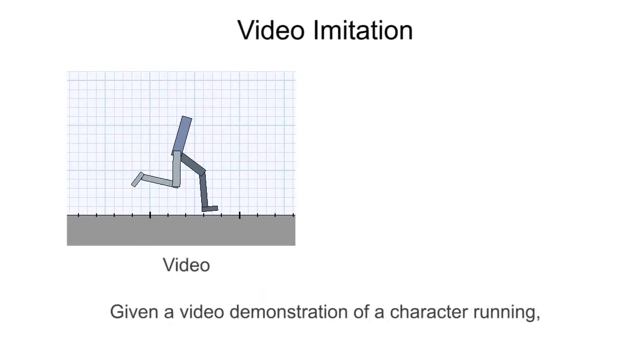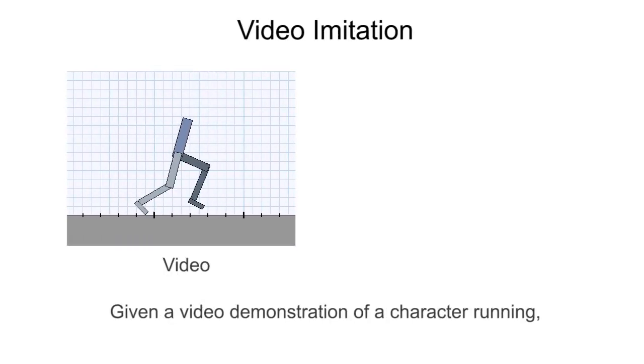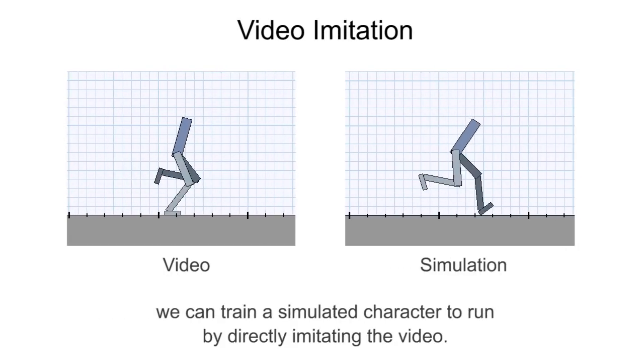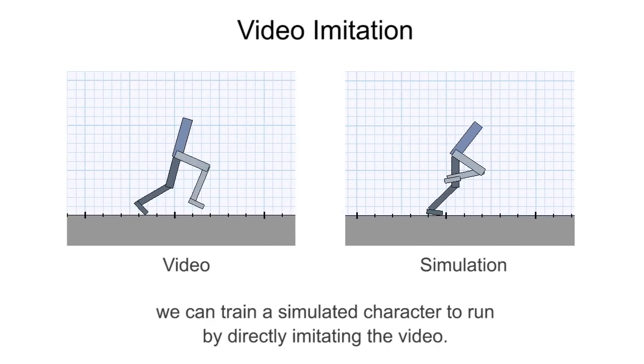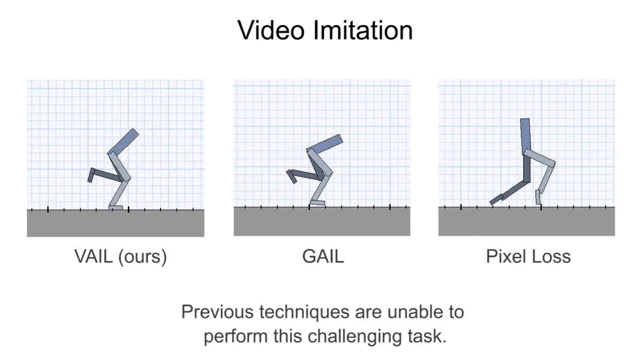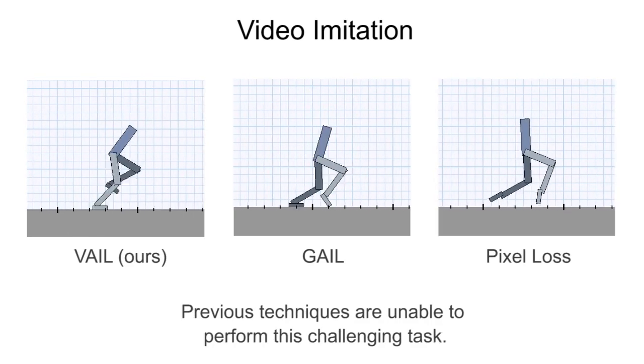Given a video demonstration of a character running, we can train a simulated character to run by directly imitating the video. Previous techniques are unable to perform this challenging task.